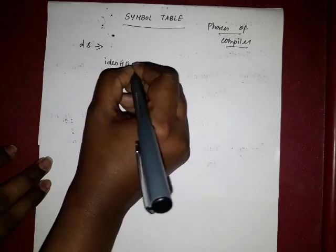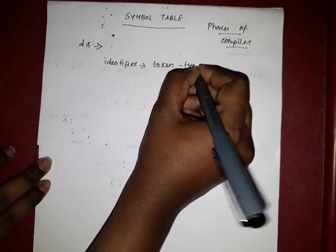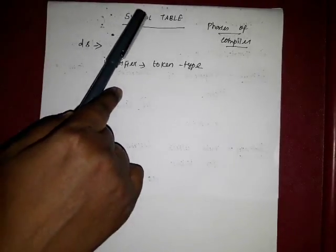Throughout all six phases, the important concept is the symbol table, which is conducted across all phases during the compilation process. The symbol table is a data structure which is used to store information about the identifiers used in the source program. An identifier is one type of token — for example, when you declare variables like integer A and B, those variables A and B are identifiers. The lexical analysis identifies identifiers, and that information is stored in the symbol table.